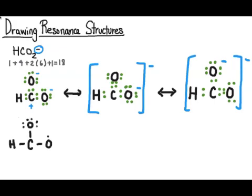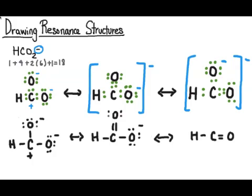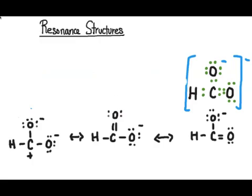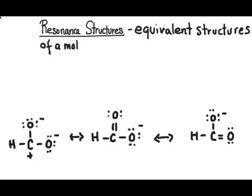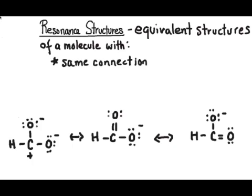I'm just going to draw the line structures here for all of these so that we can examine those rather than the dots. And from those line structures, I'm going to start looking at some rules for resonant structures and some definitions here. Resonant structures are equivalent structures of a molecule with the same connection of atoms. If you take a look at the connections, I have the same pattern of overall single-bond connections.